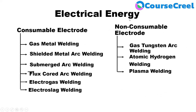For electrical energy-based welding, the main distinction is between consumable and non-consumable electrodes. Consumable electrode welding processes include gas metal arc welding, shielded metal arc welding, submerged arc welding, flux-cored arc welding, electrogas welding, and electroslag welding. Non-consumable electrode processes include gas tungsten arc welding, atomic hydrogen welding, and plasma welding.